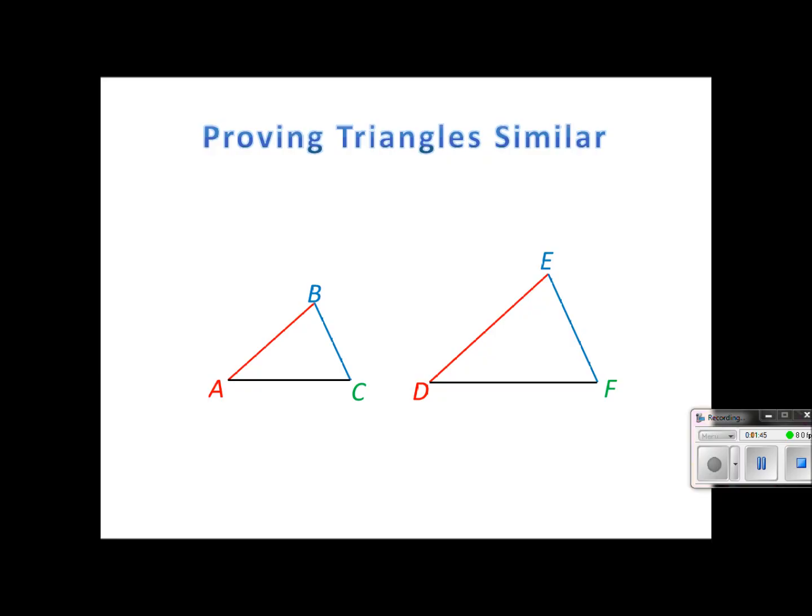The second way to prove that triangles are similar is called the side angle side similarity theorem. And we're going to use the letters SAS and then the similar symbol. And instead of showing that the sides are congruent, what we need to do is prove that they have the same scale factor.